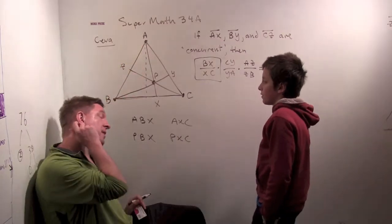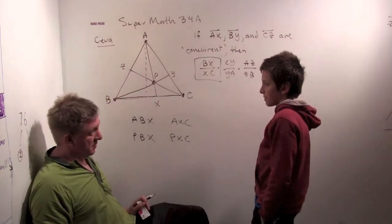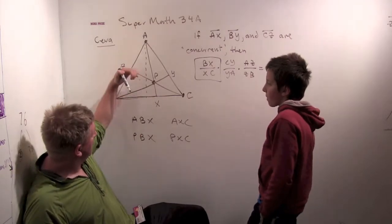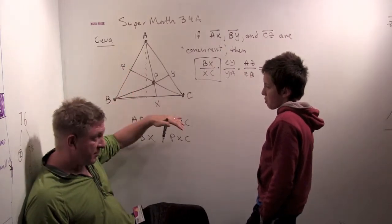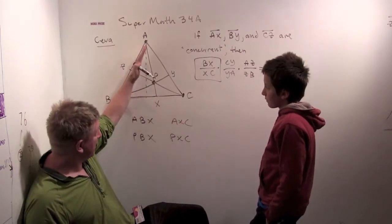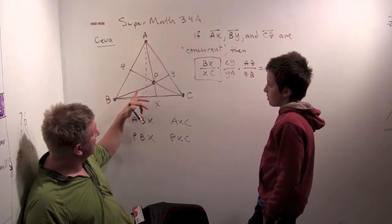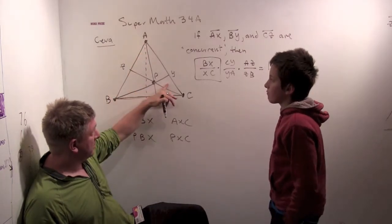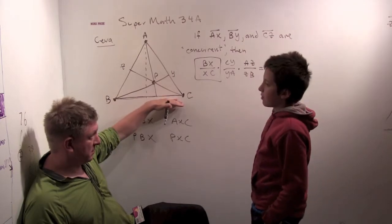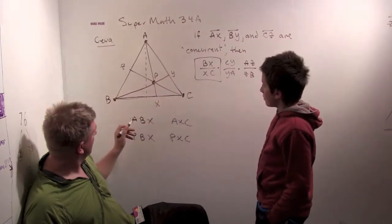And what's the, how do you find the area of the triangle? It's one half base times height. One half base times height. So if they have the same one half, from the one half base times height, and the same height, the ratio of the areas, this area to this area, is just the ratio of the bases. Do you see that? Yep. Okay.